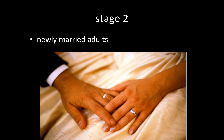Stage two is called newly married adults. The young adult has found a partner and they begin to think about the future and the possibility of becoming parents. It's important at this stage that the couple communicates and discusses expectations for one another, the relationship, and the family. They may discuss what kind of parents they want to be, whether one of them will stay home — all pre-children planning. As newly married adults, they're also focused on managing their finances together and finding a place to live.